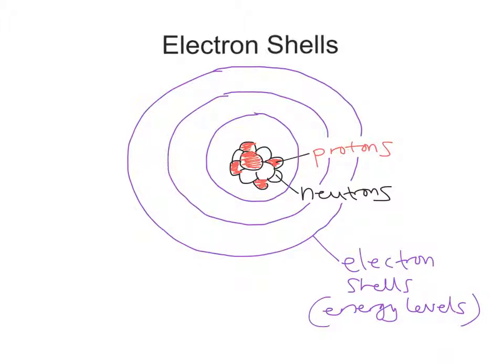Now the lowest of these energy levels is the innermost shell, the shell closest to the nucleus. Now that is always filled first. We always fill up that shell and then we fill up the ones more peripheral to that. So the closest to the nucleus is the first shell. It's the lowest energy level shell, if you like.